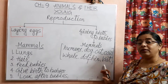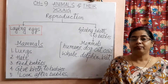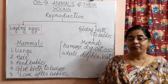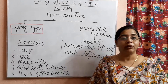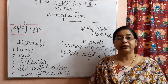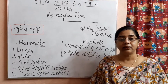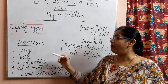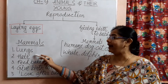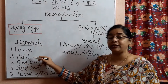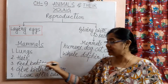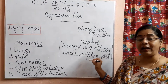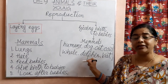Bats live on trees — they hang from trees. They are also mammals, not birds. Another characteristic of mammals is that they have hair on their bodies. Exception: whales and dolphins are hairless; they have no hair on their bodies.